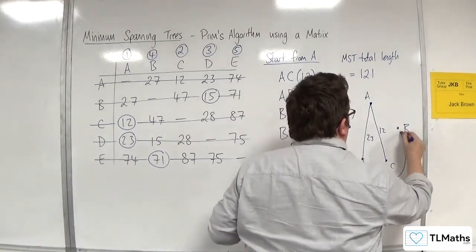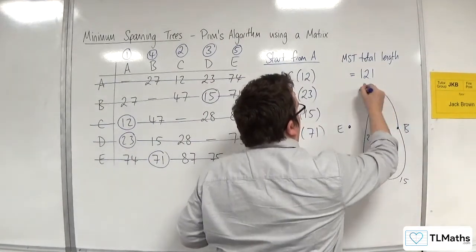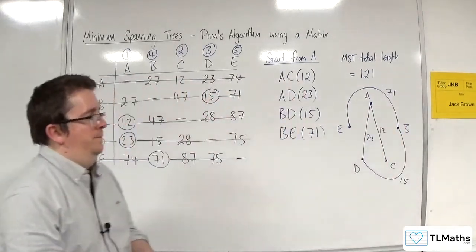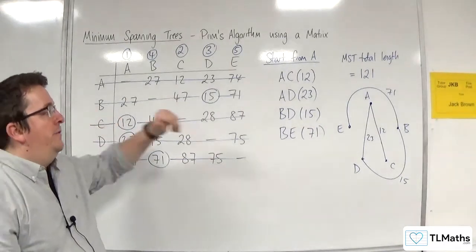So it might actually be easier to draw that edge going round. And so you avoid this. So here we go. B to D, 15. And then B to E, 71. Don't worry about drawing curved edges. That would be fine. So that would be my minimum spanning tree for this matrix.